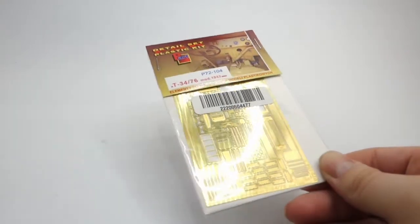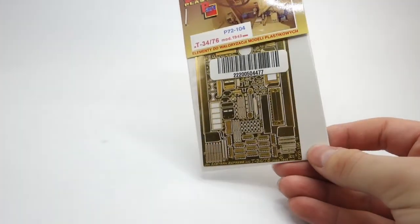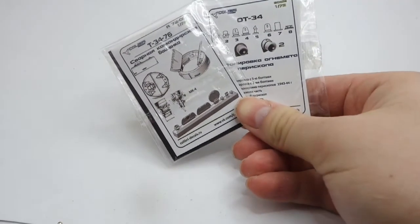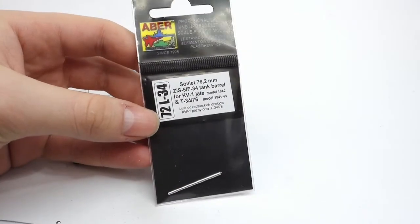For this model I also bought some aftermarket stuff like this set of photo-etched parts, those two resin conversion sets from Colibri, and this metal gun barrel from Eiber.